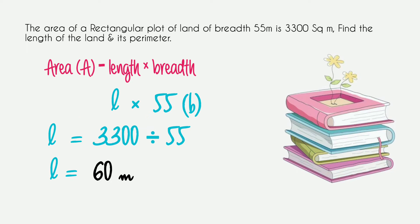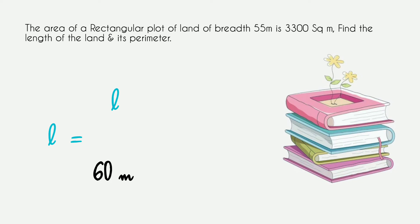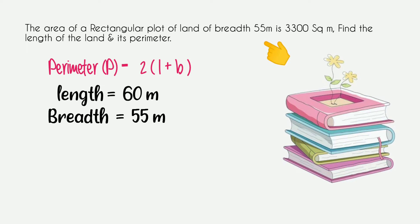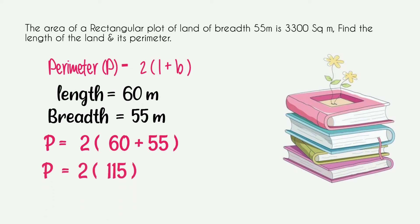From the length we will find the perimeter. The perimeter formula is twice the sum of length plus breadth. We put in the values: length is 60 meters and breadth is 55 meters. First we add the values in the bracket — 60 plus 55 is 115 — then multiply by 2, and we get the perimeter of this rectangular plot as 230 meters.